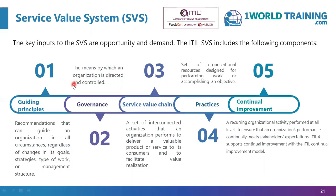The five components of the SVS: first, guiding principles, which are recommendations that can guide an organization in all circumstances, regardless of changes in its goals, strategies, types of work, or management structures. Second, governance — the means by which an organization is directed and controlled. We already looked at components one and two in a previous section.